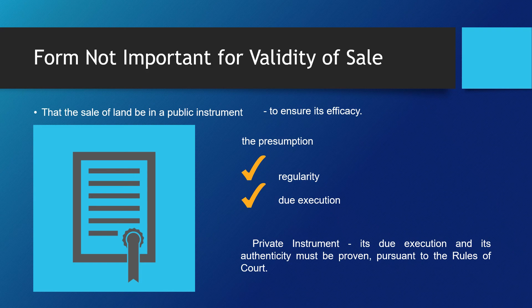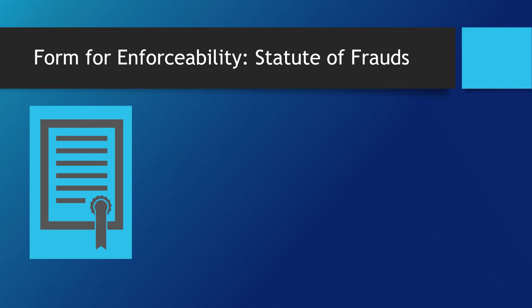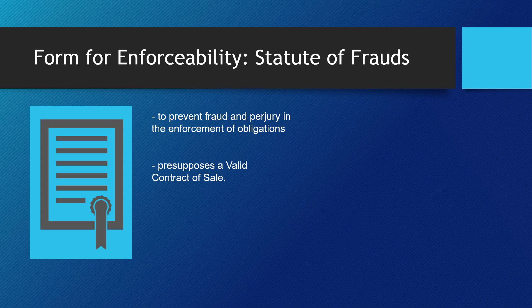There are instances, however, where form is important for enforceability, such as those under the statute of frauds. Statute of frauds refers to law provisions which require certain enumerated contracts, such as agreements for the sale of real property, to be in writing and signed by the parties, the purpose being to prevent fraud and perjury in the enforcement of obligations. Its application presupposes a valid contract of sale. Statute of frauds does not apply to contracts either partially or totally performed.